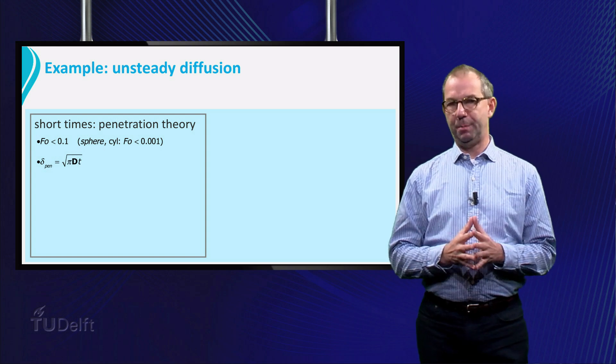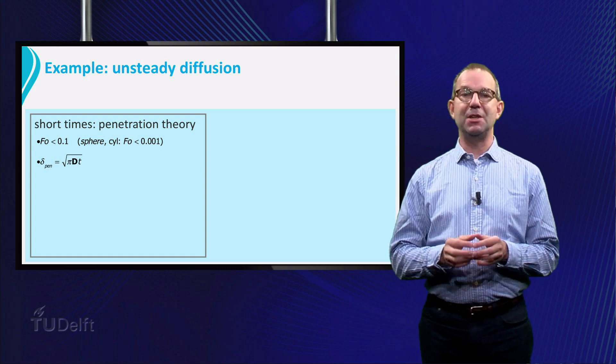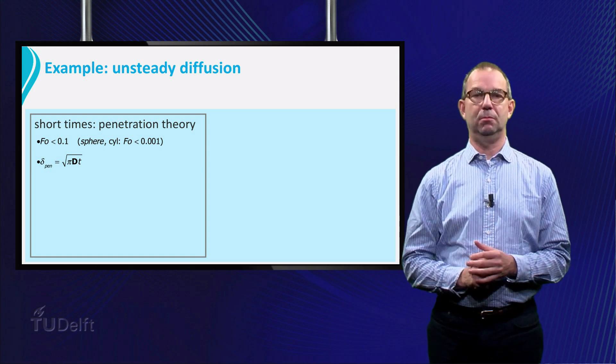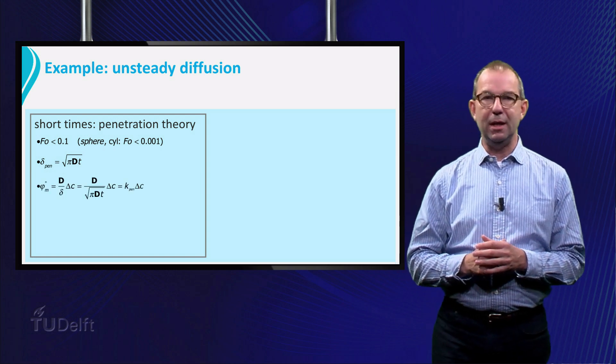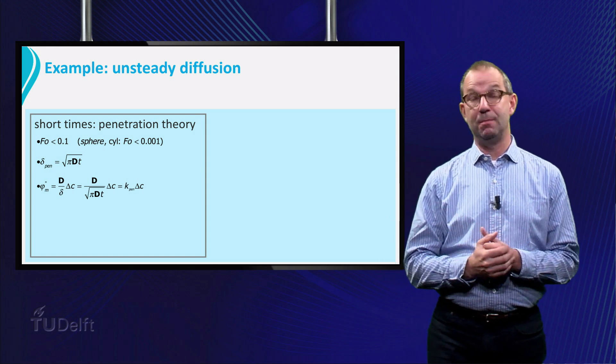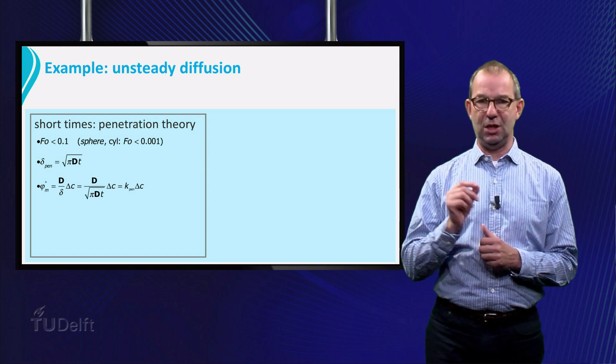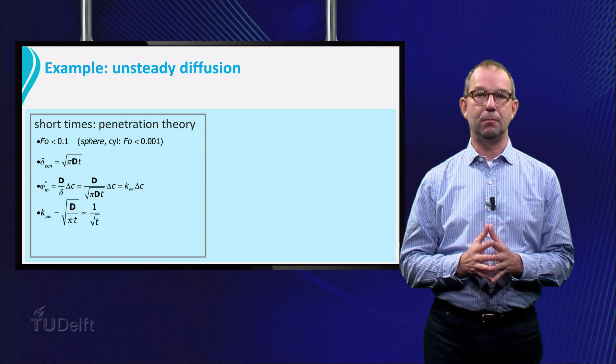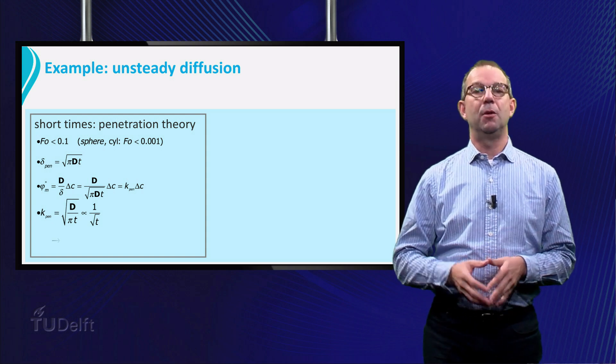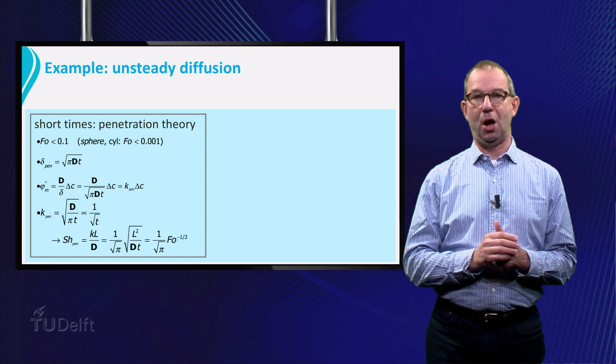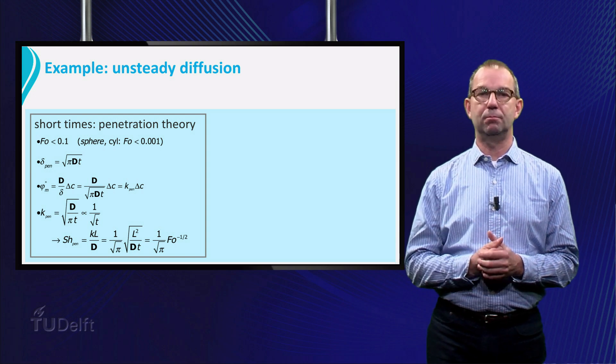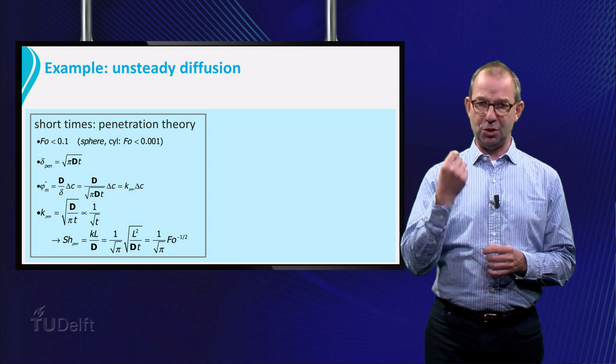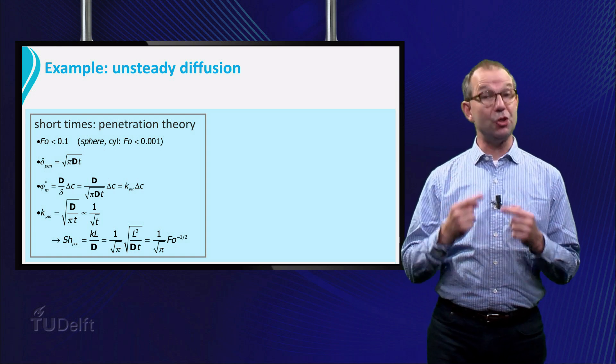We can define and use the penetration depth as a measure of how far heat or mass have diffused into the system. We can write the heat and mass flux in a similar way. That is, depending on the driving concentration difference and inversely proportional to the square root of time. And finally, we can cast everything in a time dependent Nusselt or Sherwood number.